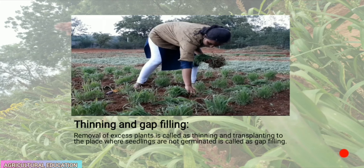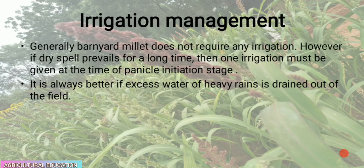Thinning and gap filling are major intercultural operations in barnyard millet. Thinning refers to removal of excess plants, while gap filling is transplanting removed plants into spots where seeds have not germinated. Barnyard millet generally does not require irrigation; however, if a dry spell prevails for a long time, one irrigation must be given at the time of panicle initiation. Excess water from heavy rains should be drained out of the field.